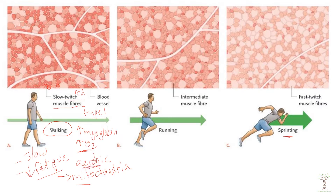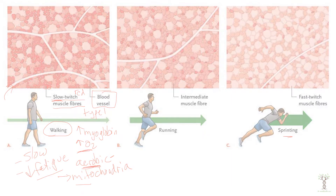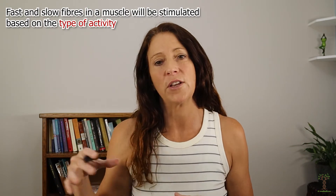Think of aerobic activities — things that you could do for a long period of time. More than 10 minutes would be considered primarily using slow twitch fibers. There are more blood vessels in muscles that have a higher proportion of slow twitch fibers. Every skeletal muscle has all three fiber types, and it's the proportion of those fiber types in each muscle that determines if that muscle is generally more of a slow twitch or fast twitch fiber muscle.